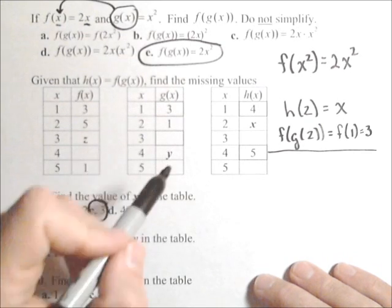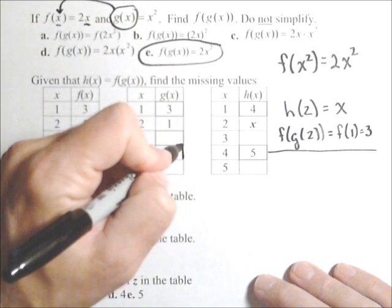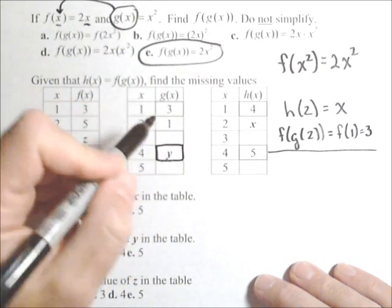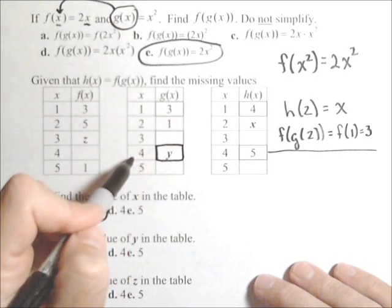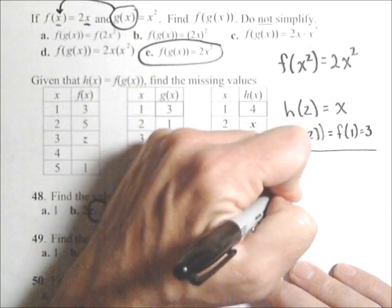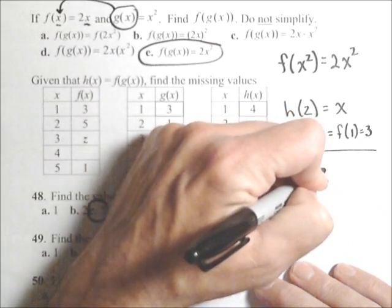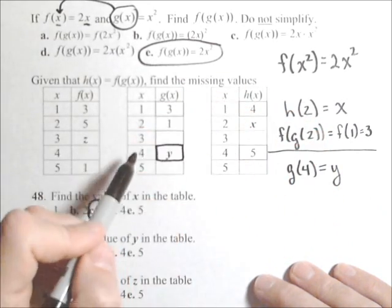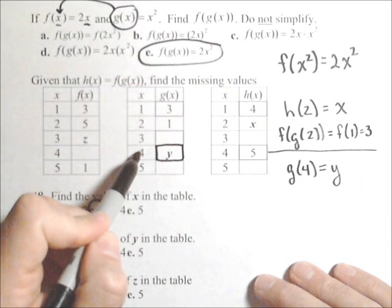The next couple get a little trickier. For instance, now we have to find y here. So what we know about y is that g of 4 equals y. So let's make a note of that, g of 4 equals y. Where does that 4 input come from? Well, that's x, and it goes into g first.